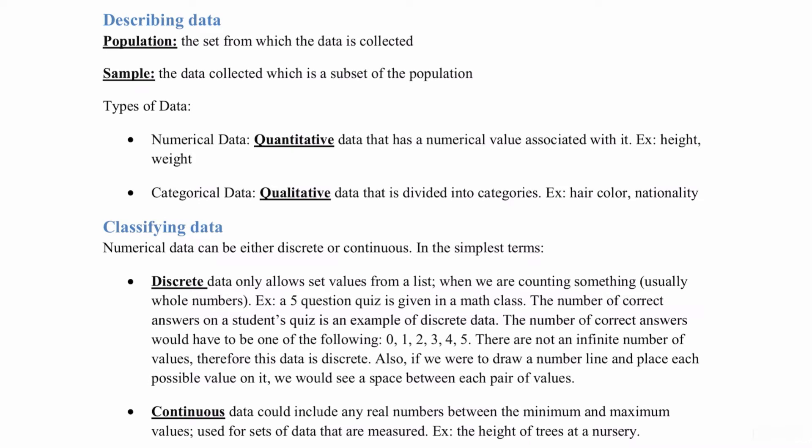Categorical data is qualitative data, and it's divided into categories. Hair color, the type of vehicles that are parked outside of your driveway, the type of transportation that people take to go to work, nationality, favorite football team. All of those are going to be examples of qualitative data.